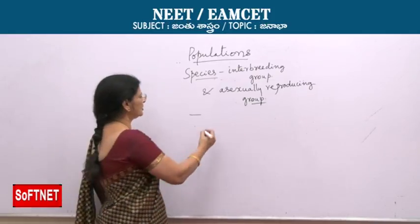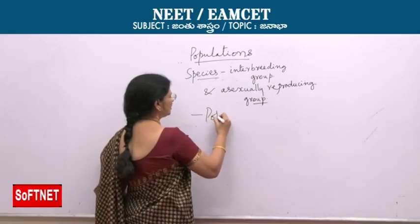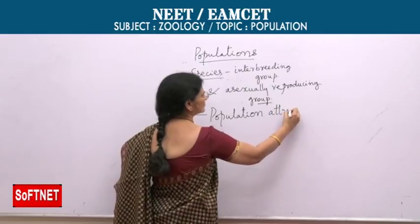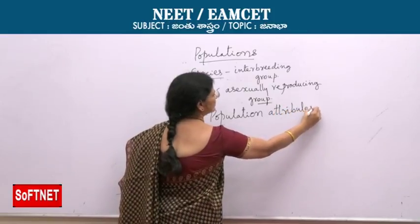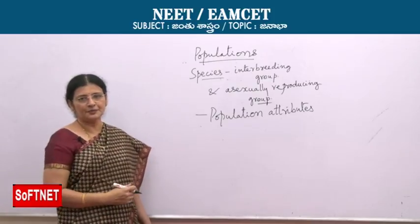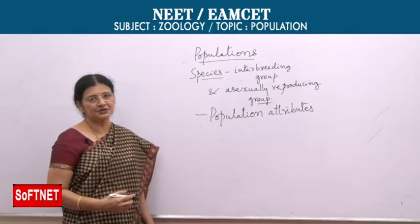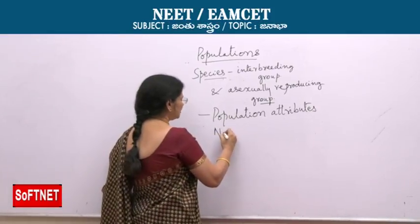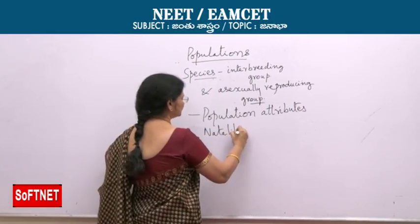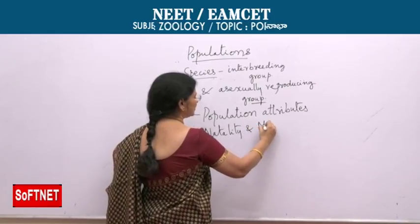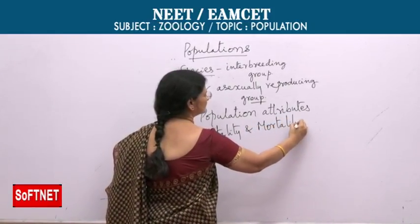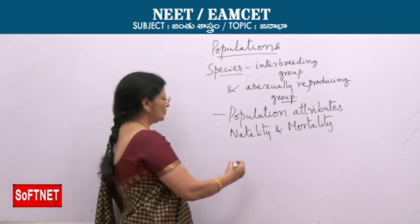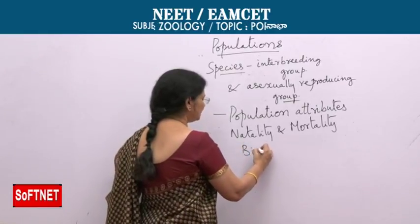These populations have certain features called population attributes. The characters of a population are called population attributes. They are mainly natality and mortality. Natality is birth rate and mortality is death rate.